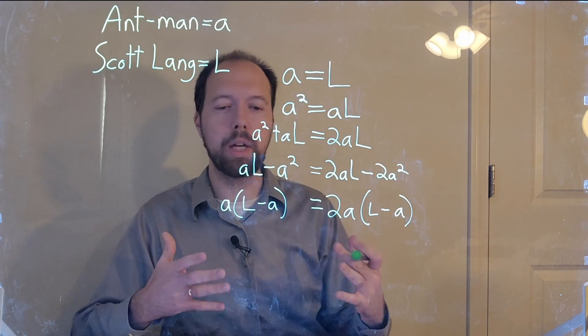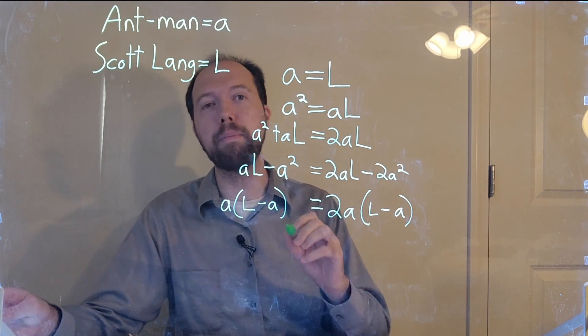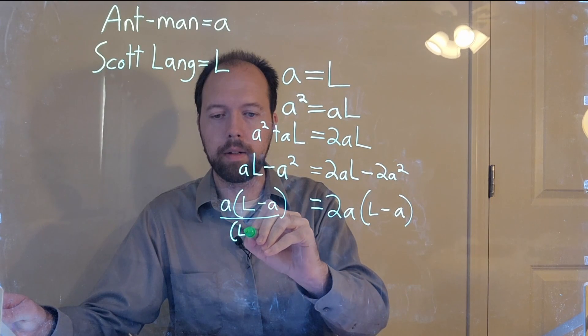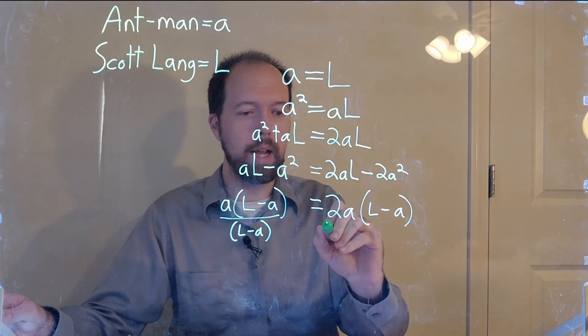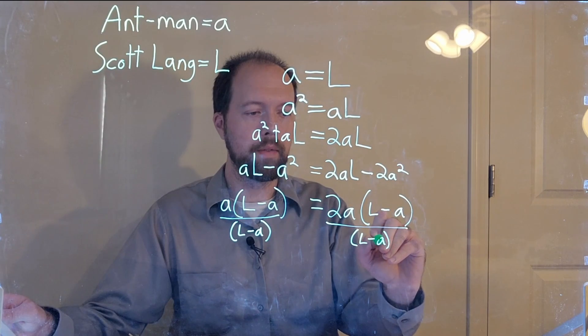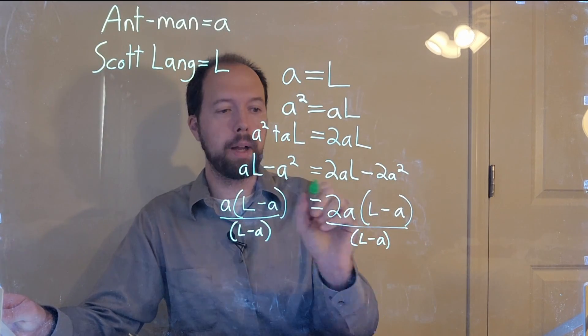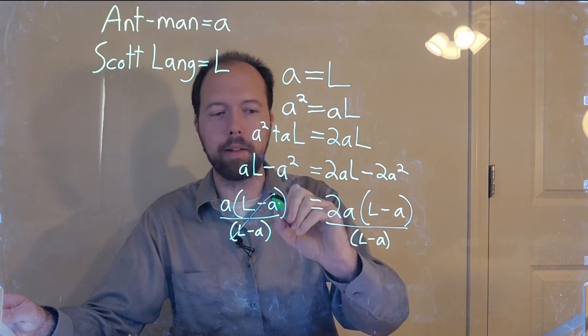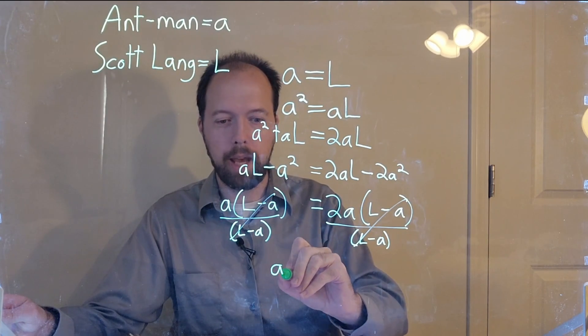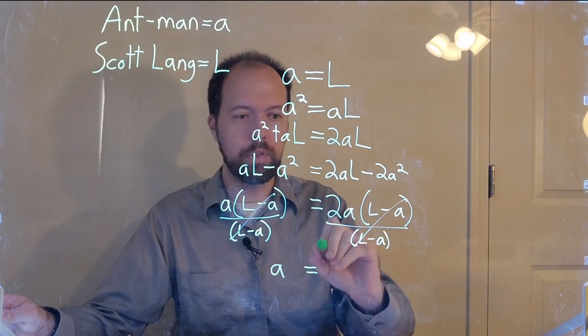So once again, making the same changes to both sides, we will divide both sides by this L minus A. Since they're multiplying on the top, dividing on the bottom, we can cancel this out here and cancel this out over here. And that leaves us with A is equal to 2A.